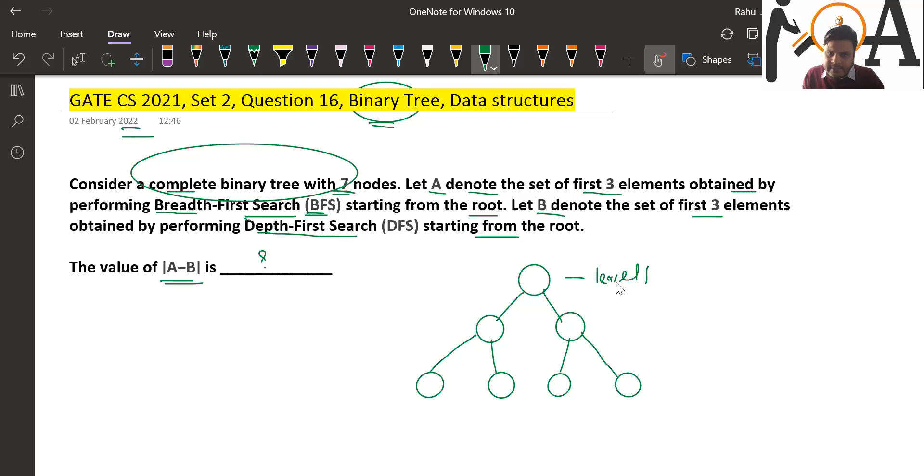This is level 2 of the complete binary tree, and this is level 3. Now let's label them: node 1, node 2, node 3, node 4, node 5, node 6, and node 7.